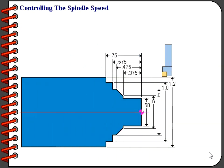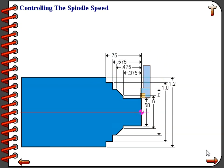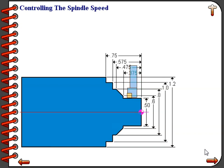Controlling the spindle is a little bit more complicated than just simply turning it on or off. On a CNC turning center we have two different ways of controlling the spindle speed: constant surface speed and direct RPM programming. Constant surface speed takes into account that as the tool is cutting different diameters, the RPM of the spindle needs to change. This has to do with the change in the diameter of the workpiece.